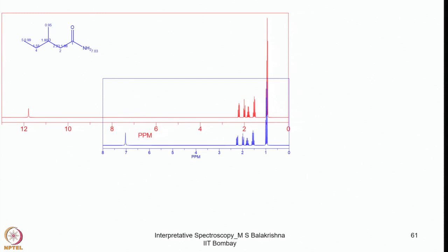The IR spectra for both the alcohol and the amide are shown. In the alcohol, the broad O–H band is visible, and in the amide, the N–H band is present instead. This portion of the spectrum otherwise remains almost unchanged. One can also use NMR conveniently to confirm whether the reaction is completed, as the conversion of the O–H group into the amide can also be confirmed from NMR spectroscopy.